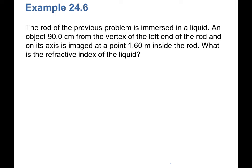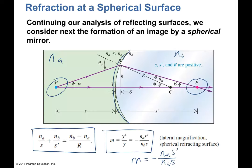Looking at the diagram, light starting from P refracts and goes into the new medium. There is a little reflection, but starting from this part we don't care about reflection anymore. The refracted light carries most of the intensity; the reflected light is negligible. So we concentrate on refraction — that's why it's called refraction at the spherical surfaces.